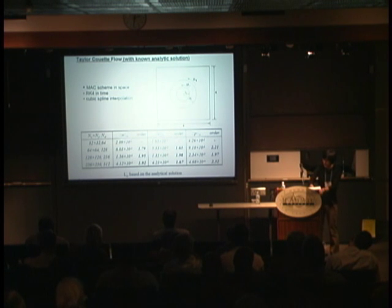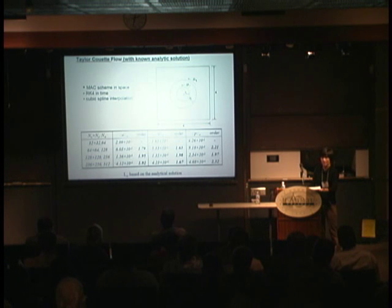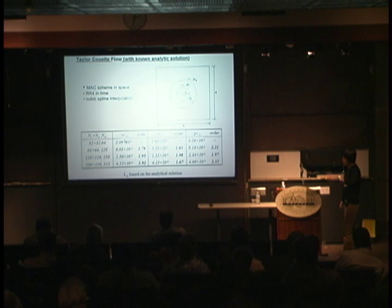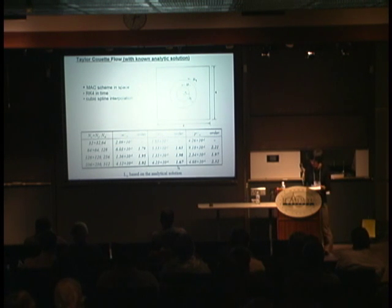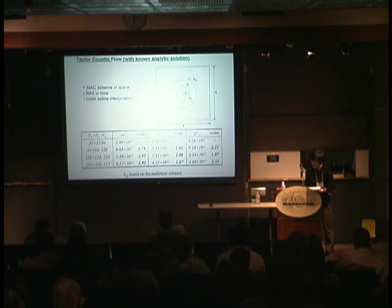The first test is the Taylor-Couette flow: two concentric cylinders rotating at different speeds, with a known analytic solution. Using that analytic solution, we test the order of accuracy. The error we look at is the infinity norm — essentially the maximum error along the interface, which is what we care about resolving. The order is not exactly two but close to two, which is much better than the immersed boundary method. Volume conservation is also much improved.